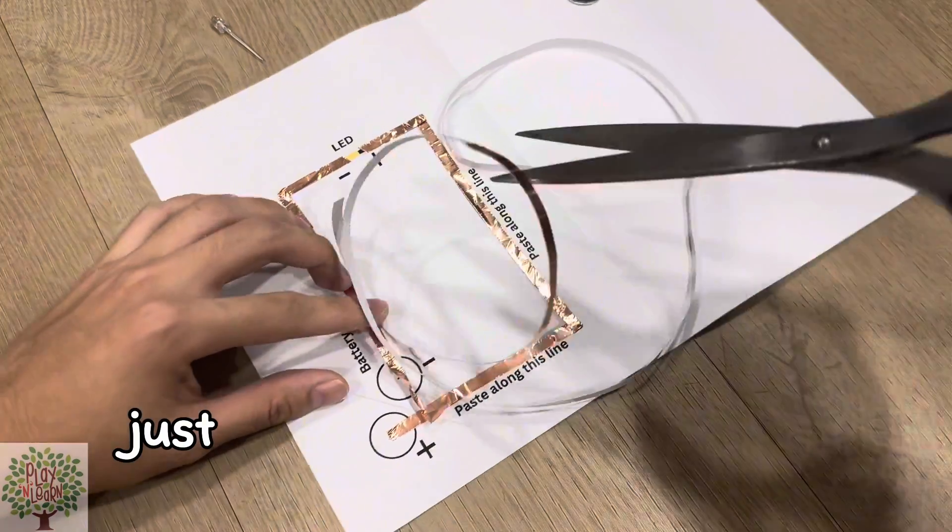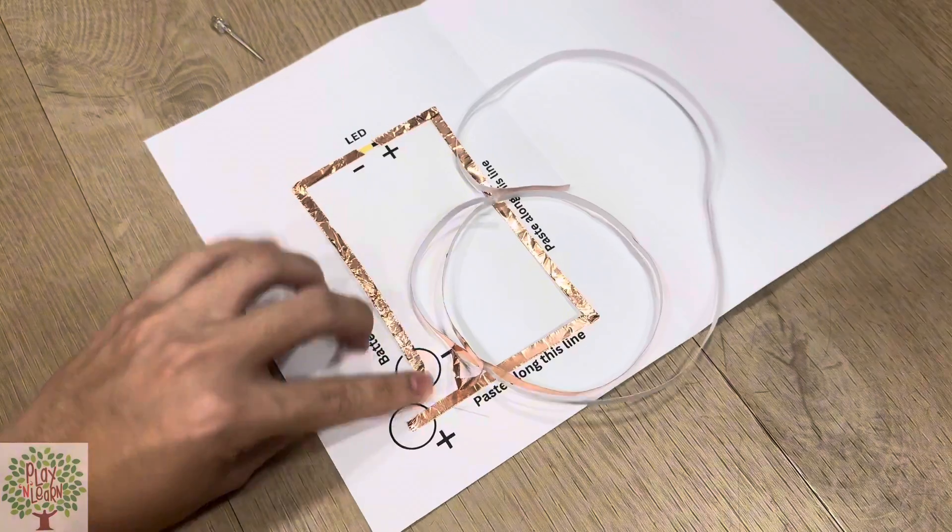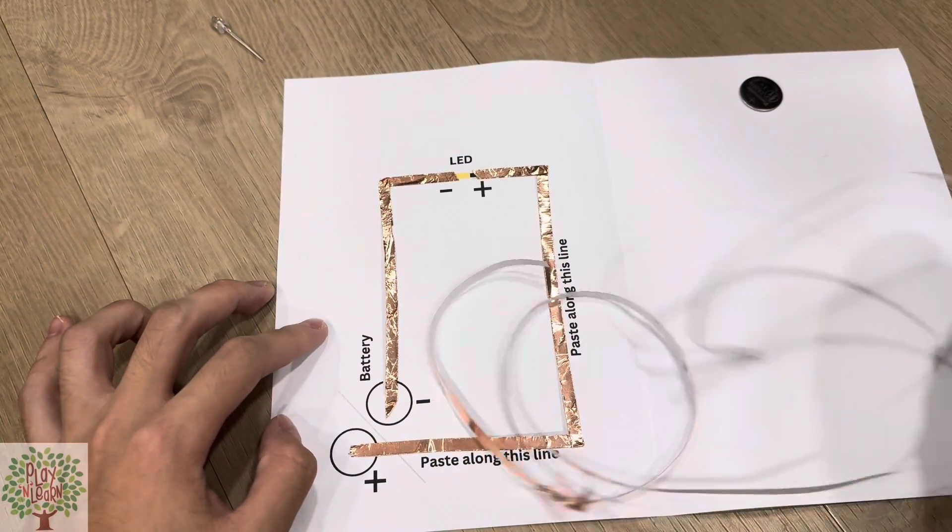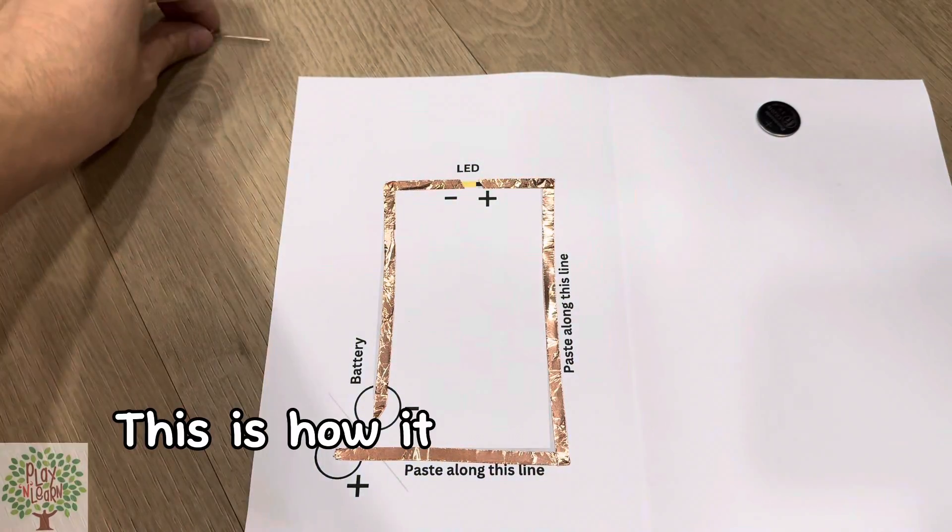So now when you reach the end, just cut the copper tape off and you're done. See how the copper tape is placed along the lines? This is how it should look like.